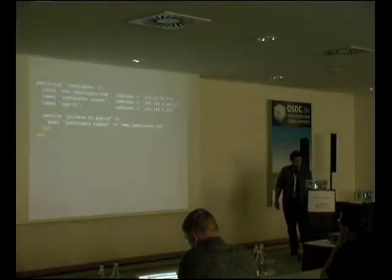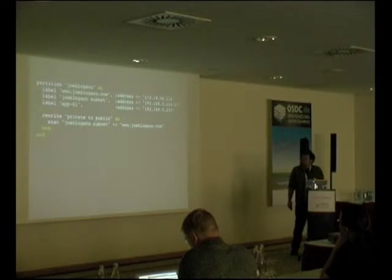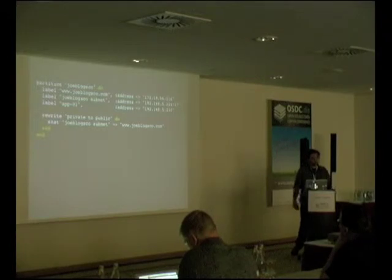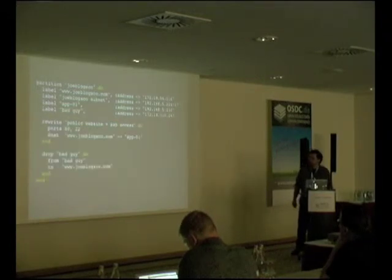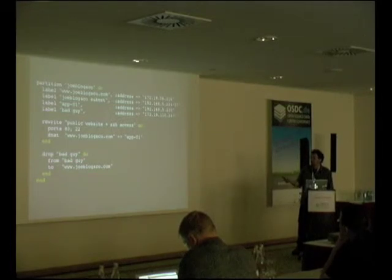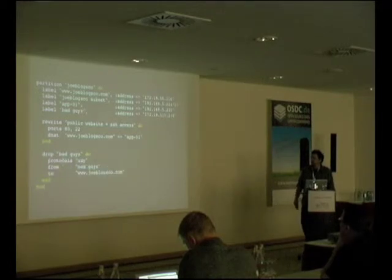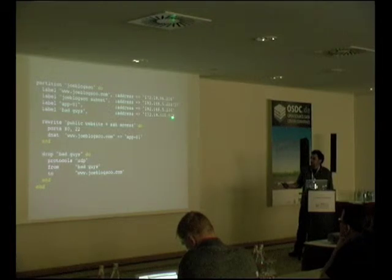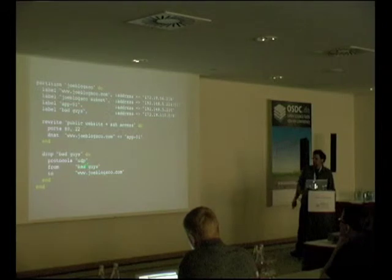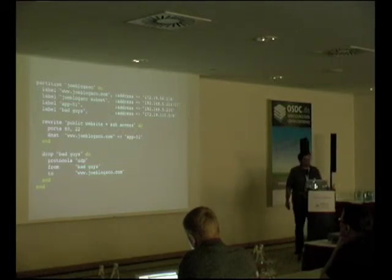There are other types of rules you can define beyond rewrites. You can add specific drops — saying there's a bad guy coming from this address and we need to drop it. You can also specify a range like a slash eight to block a large portion of IP space, and block on UDP, which is common for DDoS attacks.